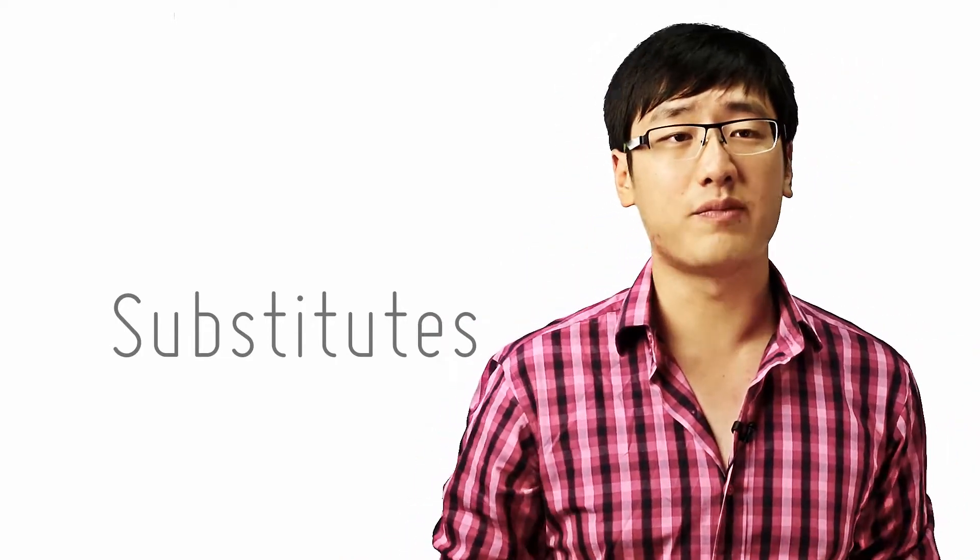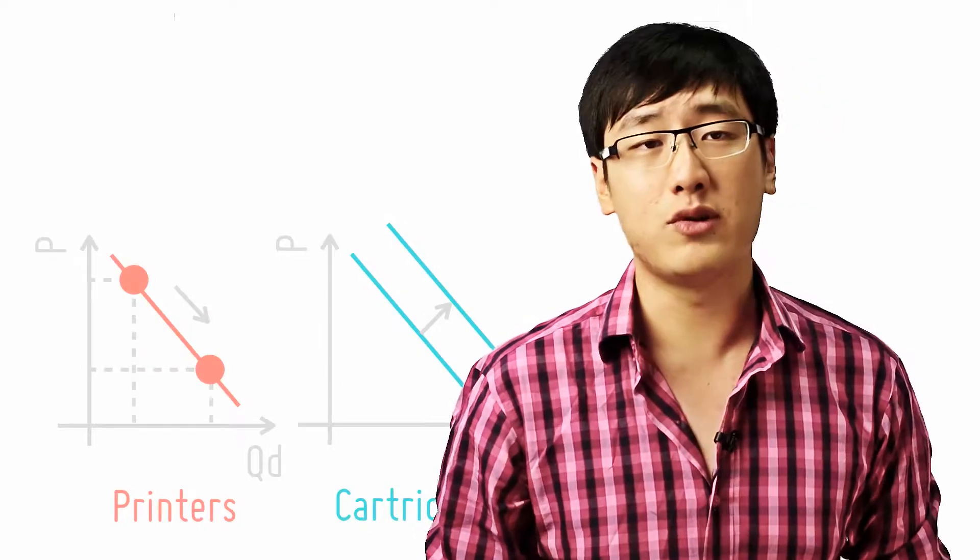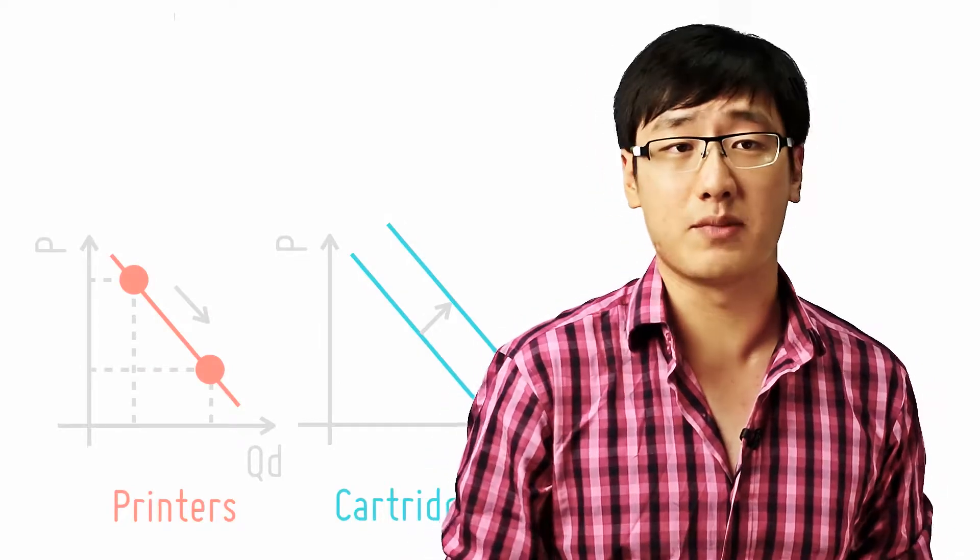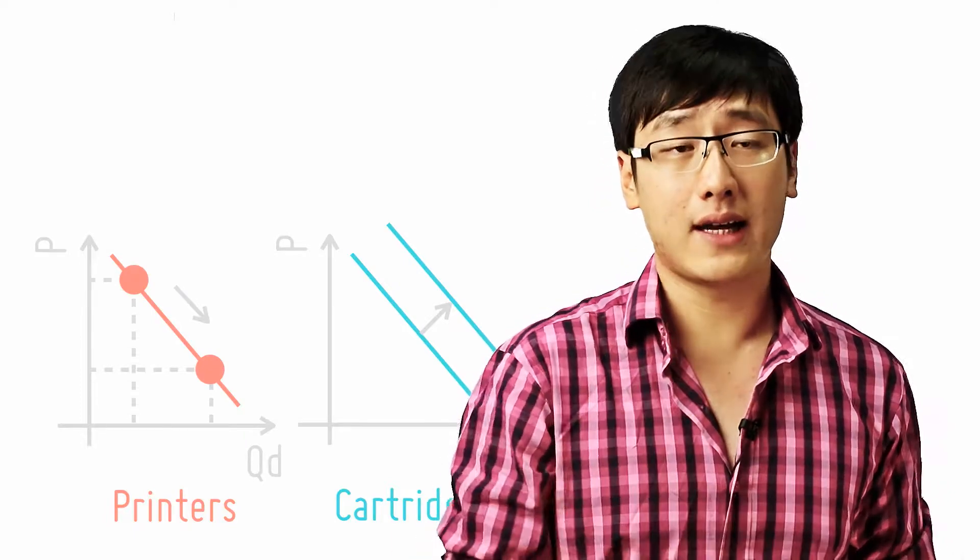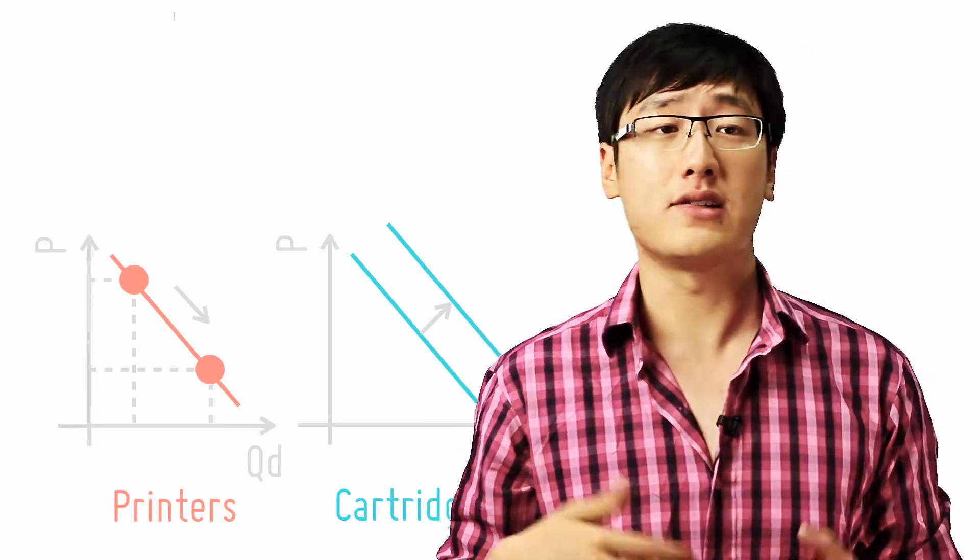Now you must be thinking then if the sign is negative, what happens? Well, let's say that when the price of Printer decreases, what happens to the demand of ink cartridges? Well, more people buy printers when the price of Printer decreases, then they need more ink cartridges. So the demand of cartridges increases.